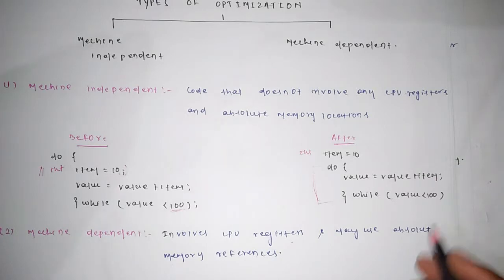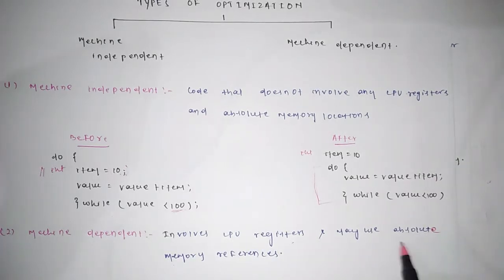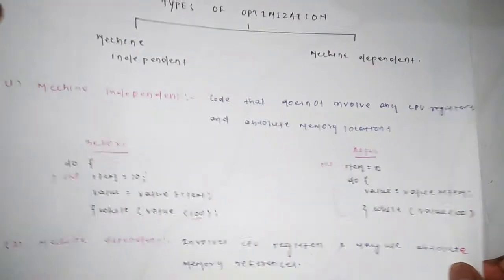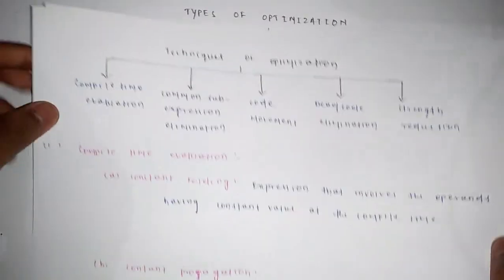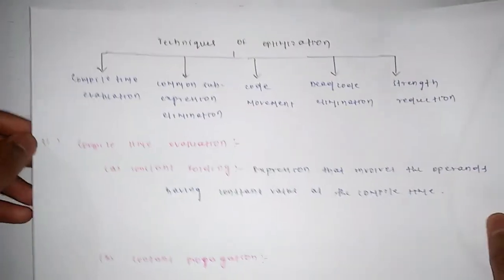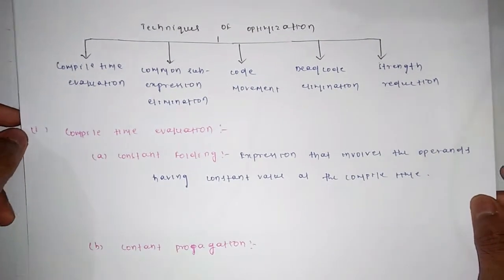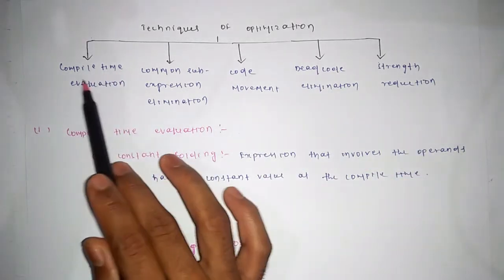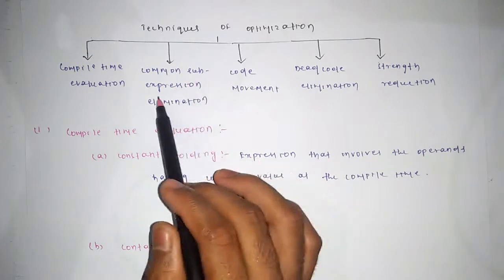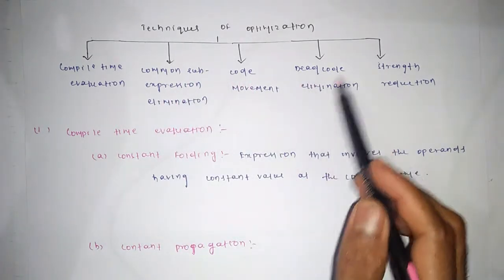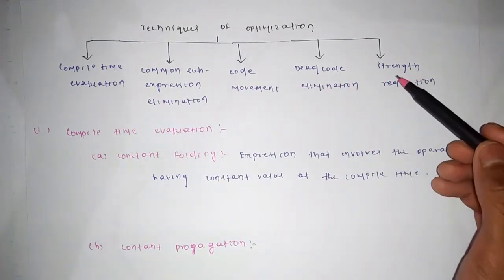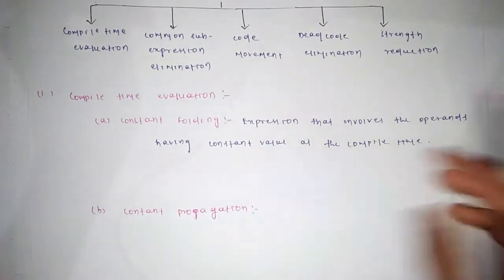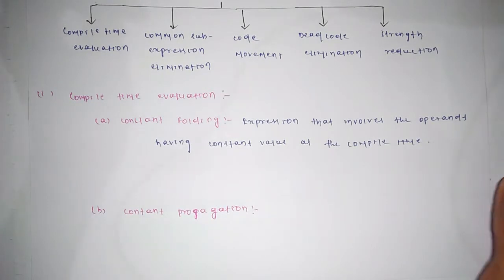Machine dependent optimization means the code involves CPU registers and may use absolute memory references. Now we will see the techniques of optimization. There are basically five techniques: compile time evaluation, common sub-expression elimination, code movement, dead code elimination, and strength reduction. We will see each technique one by one.